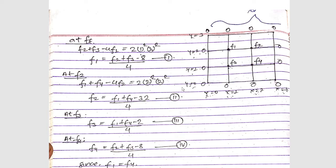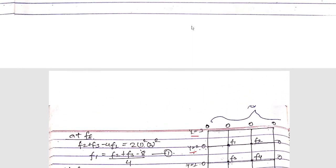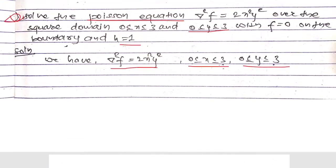Similarly for y it will be y = 0, y = 1, y = 2, and y = 3. The boundary condition f = 0 means all sides of the domain have value zero.